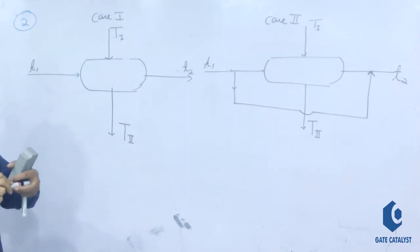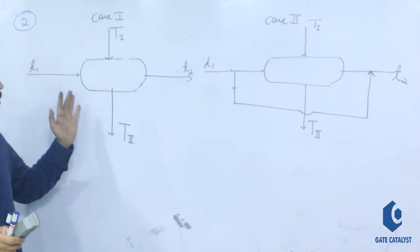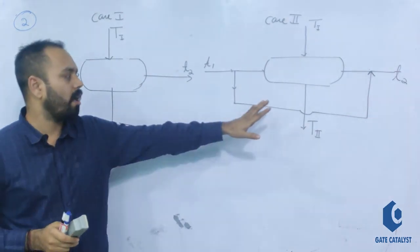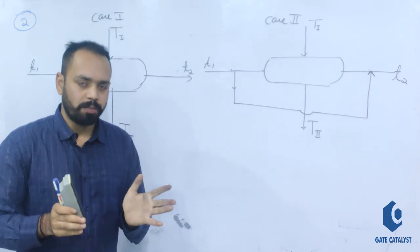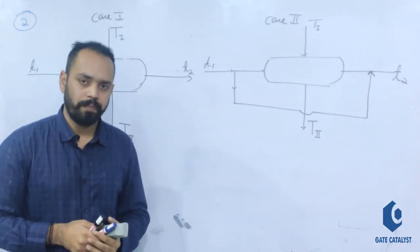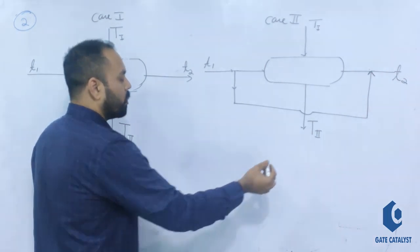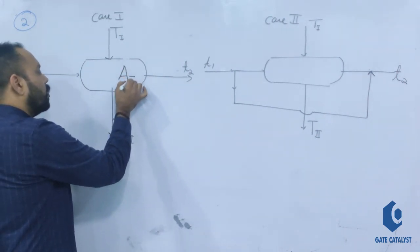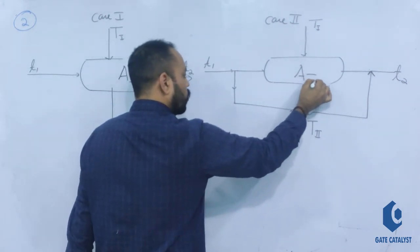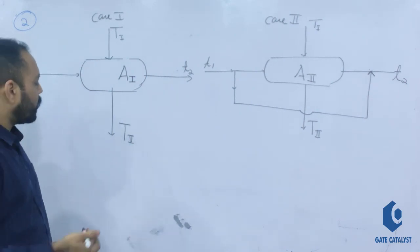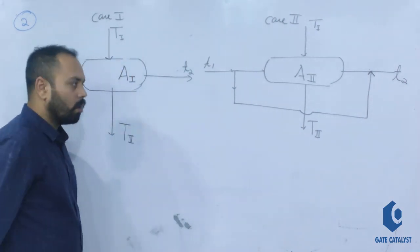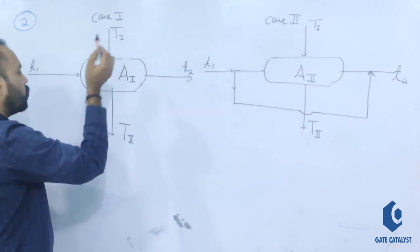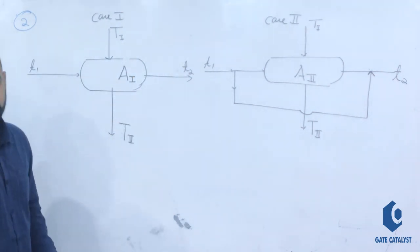Both cases have the same inlet temperatures, the same flow rates, and the same information. The question asks what can be said about the hot stream exit temperature T2 and the heat exchanger area in each case. The capital T denotes the hot stream temperature and small t the cold stream temperature.